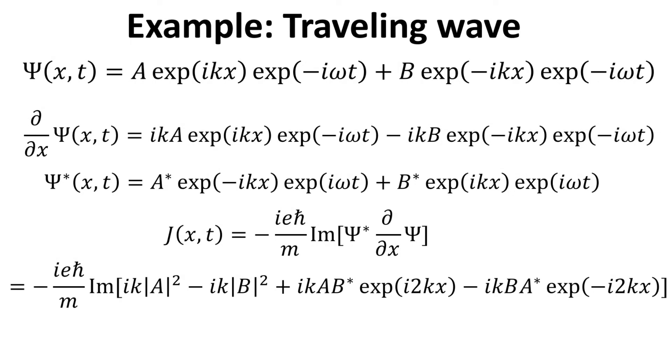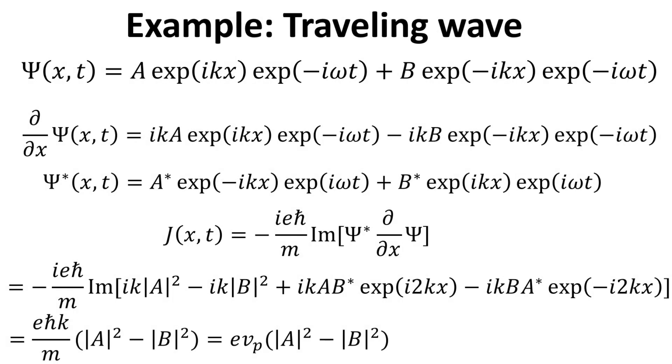We can work out an expression for the current density using the formula we derived earlier. Since the last two terms collectively is real, the current density then reduces to the electronic charge E times the phase velocity and times the difference in the modulus square of A and B.